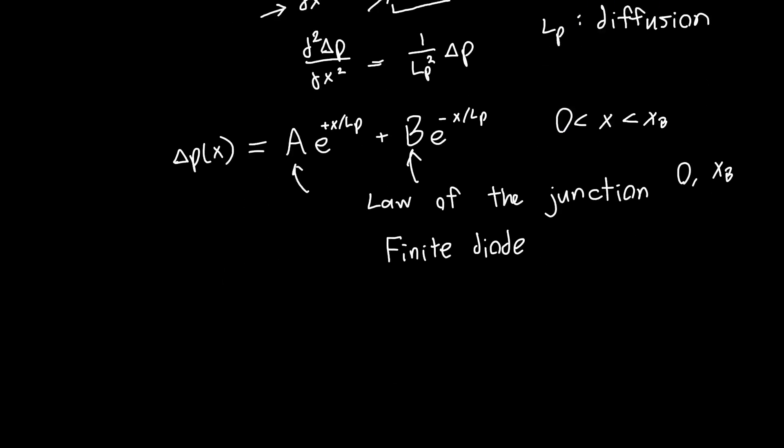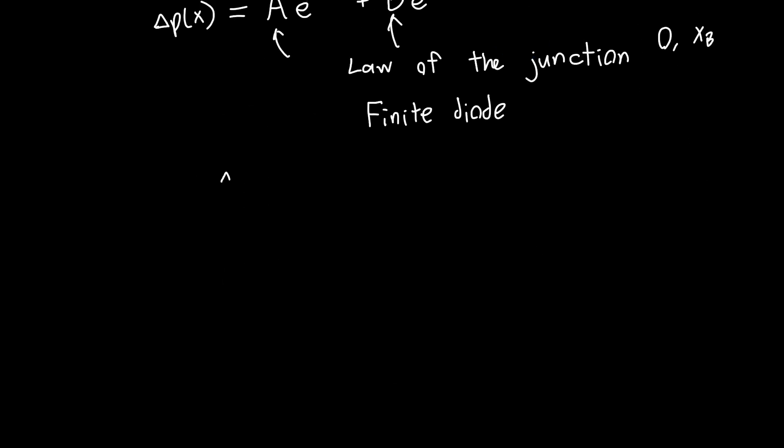But what you're ultimately going to get if you solve for A and B, and we plot this, say from x equals zero to x equals xB, and this is delta P of x. And this is our, say this is one of our boundary conditions and the other one. So this is delta P at zero, and this is delta P at xB.